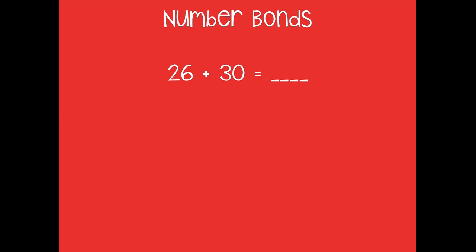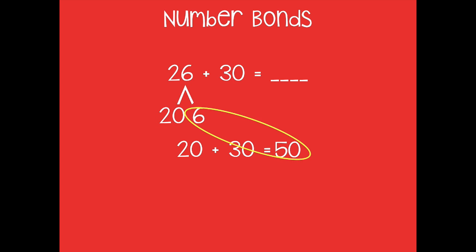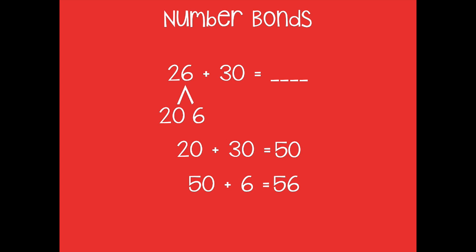Let's see how we could do that with a number bond. I have 26 plus 30. I can break 26 into 20 and 6 — breaking apart my tens and ones. Then all I have to do is combine my tens: 20 plus 30 equals 50. Now I have to add that 6, so 50 plus 6 equals 56. So 26 plus 30 equals 56.